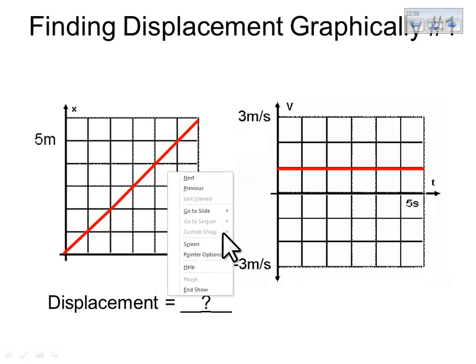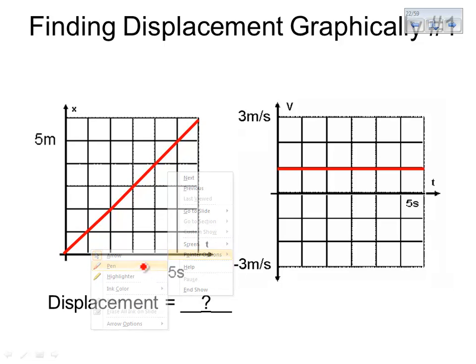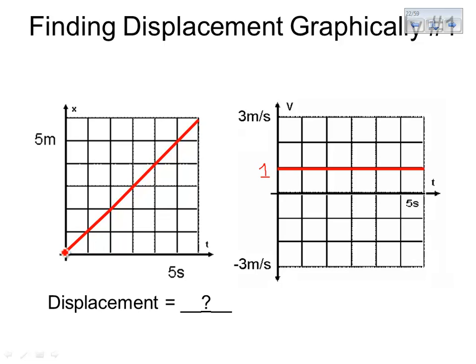We have a velocity of one meter per second. These two graphs tell us the same story of how an object is moving. The position versus time graph tells us it's moving forward at a constant velocity of one meter per second. The velocity graph tells us the same thing — we know it's moving forward because it has a positive velocity, it's above zero, and we know it's a constant velocity because the velocity remains unchanged. It's just two different types of representations.